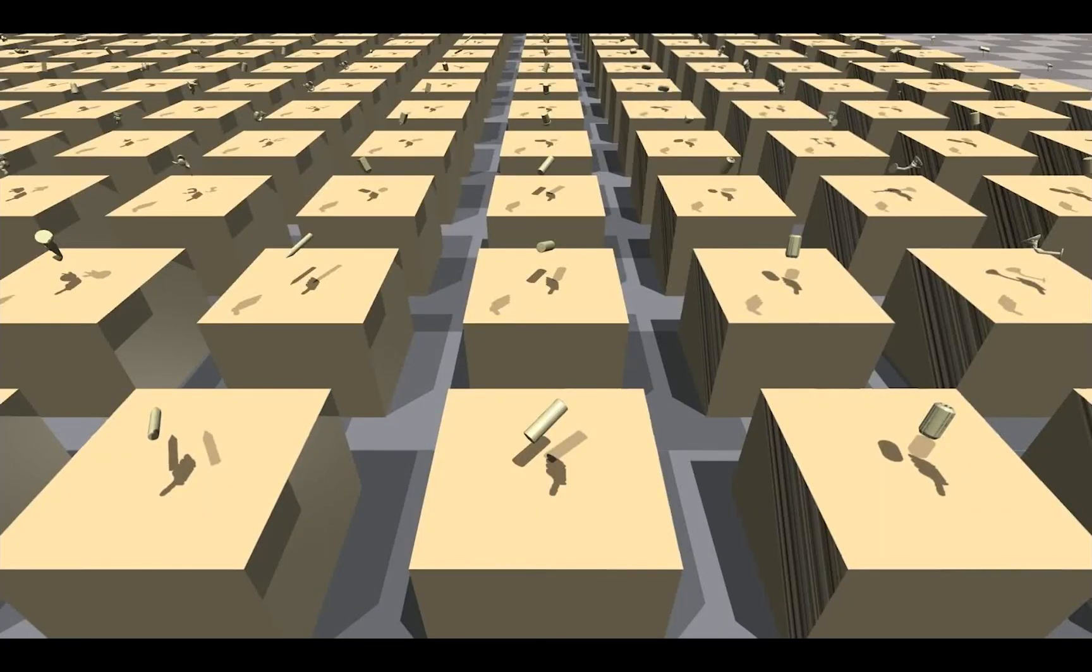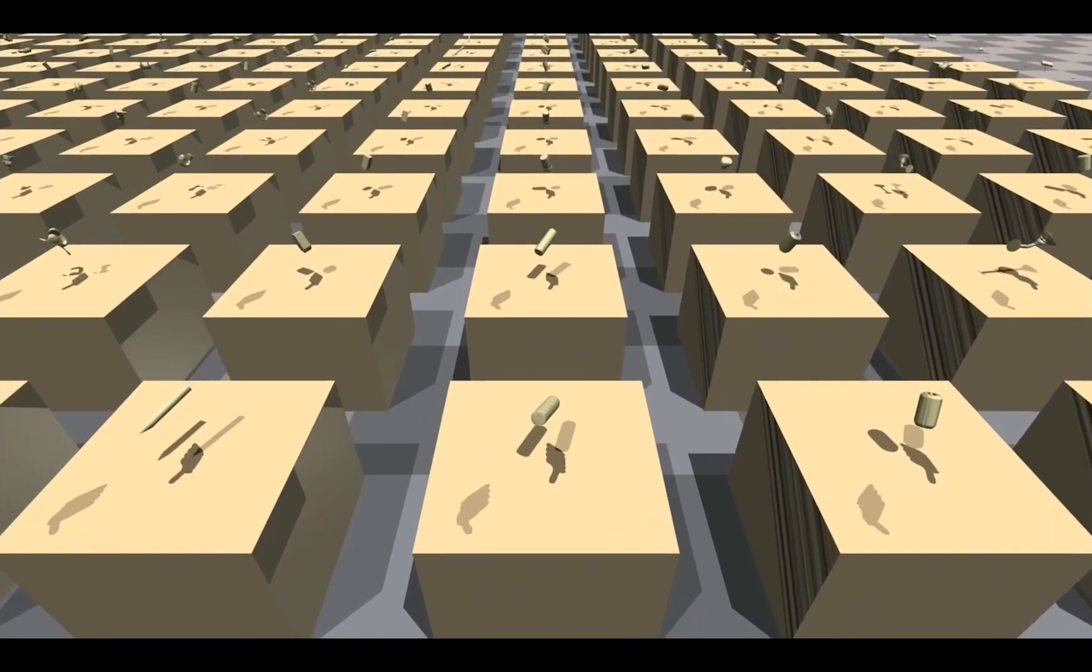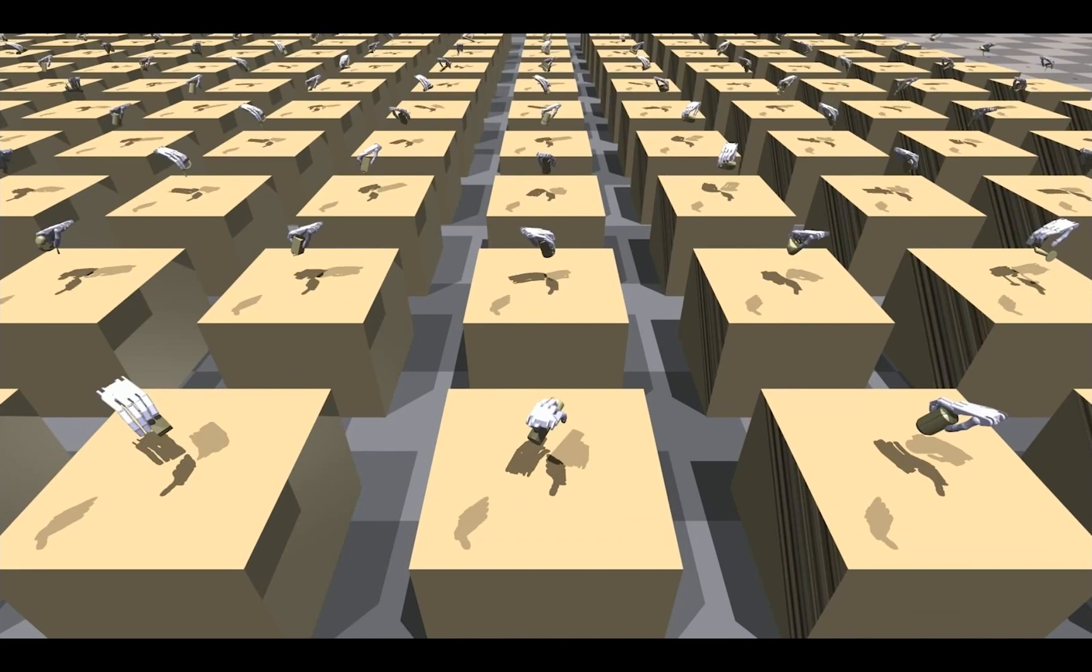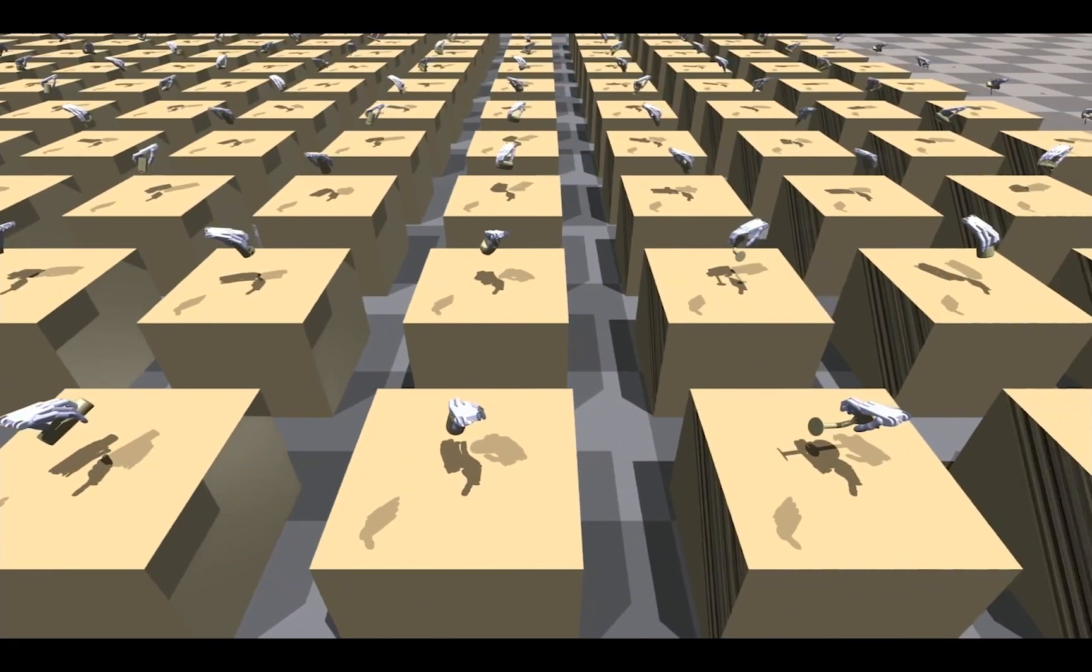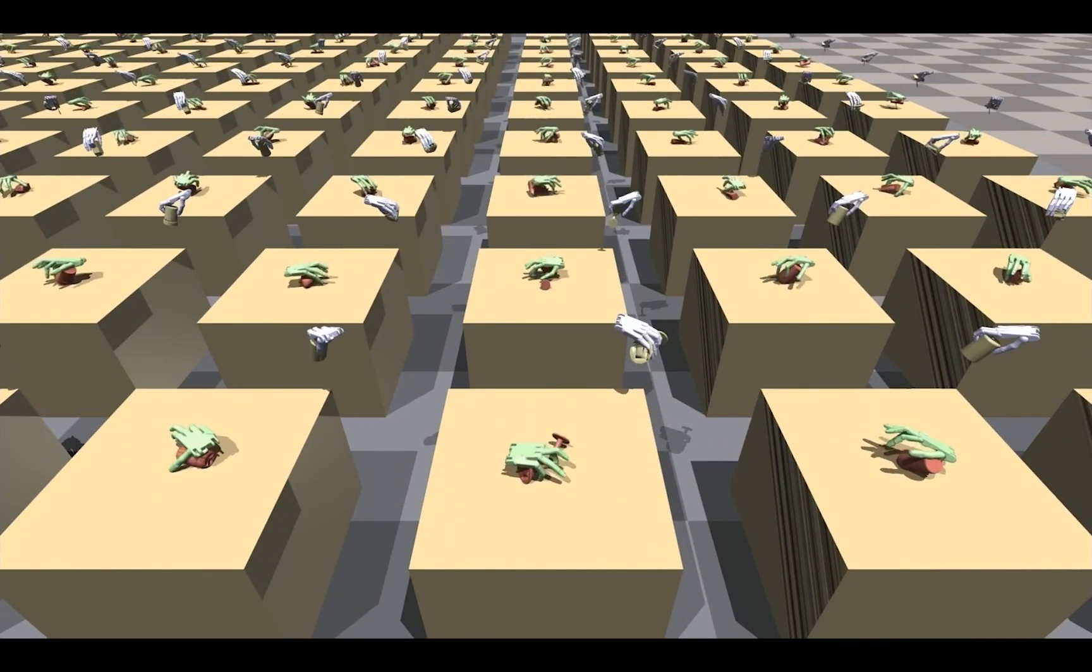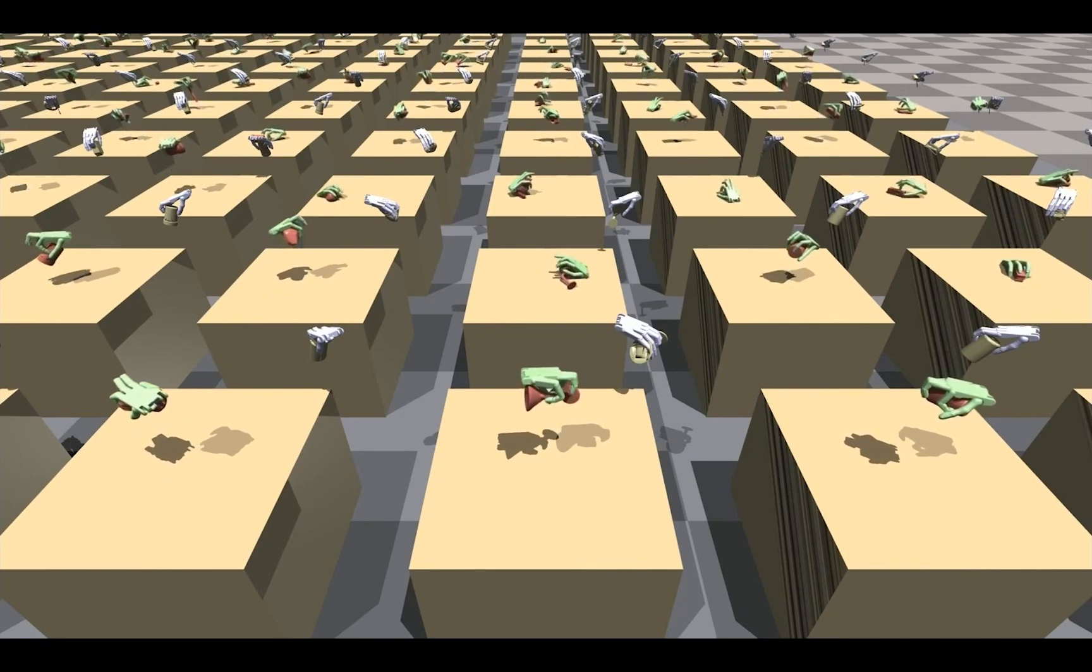Here are our diverse training object assets which contain 5,519 object instances in 133 categories. Here shows our diverse valid grasps on these objects. There are 1.12 million valid grasps in total. We use these grasp labels as the goal of our goal condition policy. We train the policy on this synthesized large-scale dexterous grasp dataset.